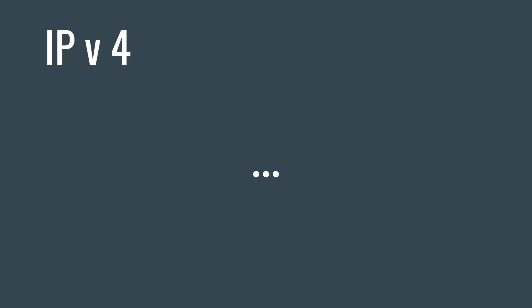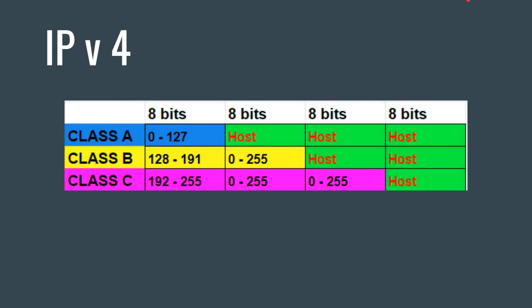Some characteristics of IP version 4 and logical addressing: we have class A, class B, and class C networks. It's basically a set of four numbers separated by a dot — the logical address of a host. The numbers in each octet are between 0 and 255, but 0 and 255 aren't used for hosts. A class A network has its first octet between 0 and 127, with the remaining octets for hosts. Class B is 128 through 191, using the first two octets for the network and the last two for hosts. A class C network uses the first three octets for the network range and the last octet for hosts.